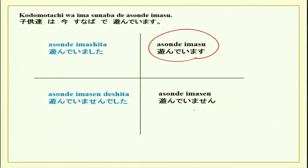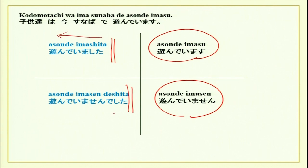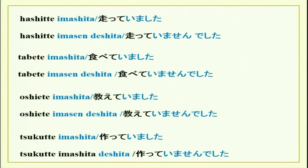This we did last time, and this time concentrate on: Asonde imashita — past tense positive; and Asonde imasen deshita — past negative. The sentence was: Kodomo tachi wa ima sunaba de asonde imashita. In past tense: Hashitte imashita / Hashitte imasen deshita; Tabete imashita / Tabete imasen deshita; Oshiete imashita / Oshiete imasen deshita; Sukute imashita / Sukute imasen deshita. You can practice this loudly and get the correct intonation.